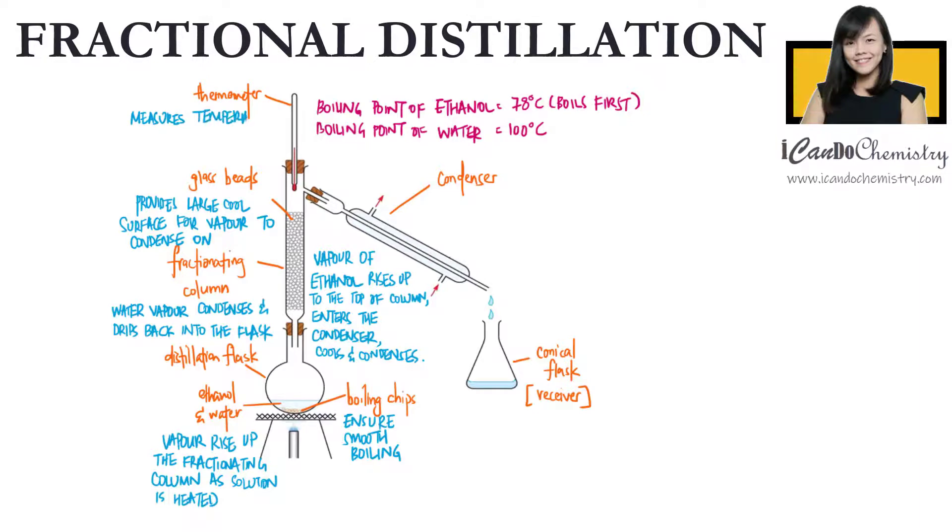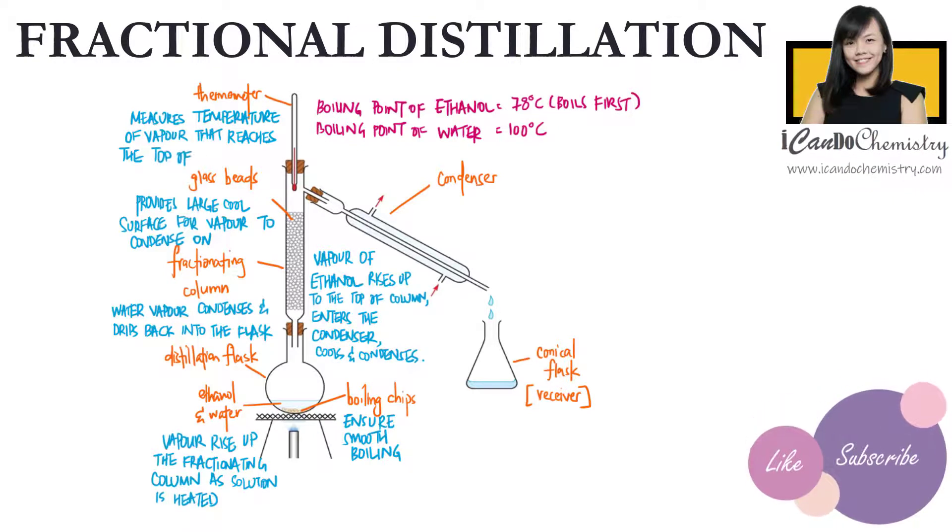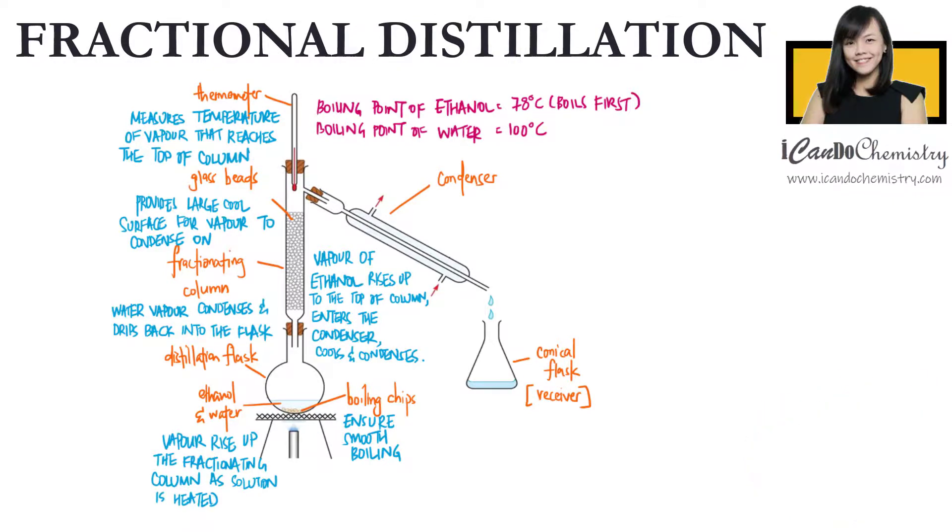The thermometer which is placed at the top of the flask is used to measure the temperature of the vapour that reaches the top of the column. When we are collecting ethanol, the thermometer will show a constant temperature of 78 degrees Celsius, which is the boiling point of ethanol.